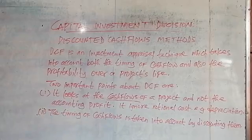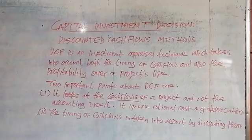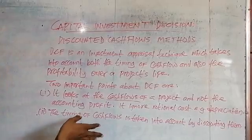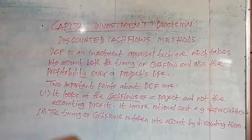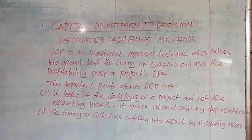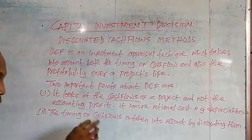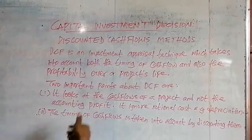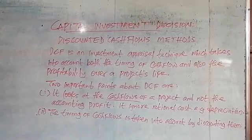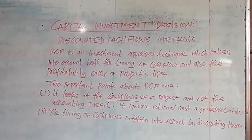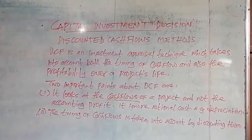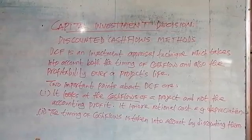The first assumption is that the initial outlay — the amount you invest in a project — is assumed to occur in year zero, that is now. If you invest a certain amount of money on a particular project, that outflow on that investment is assumed to occur in year zero. The initial outlay is assumed to occur in year zero.